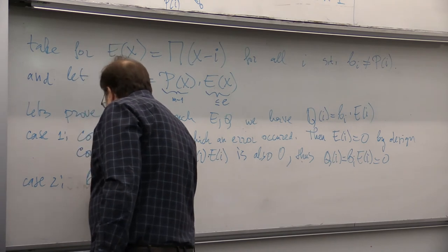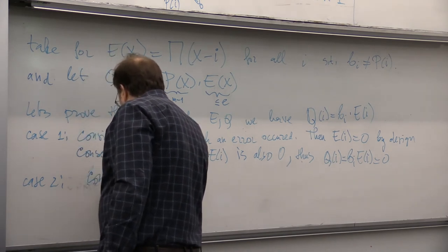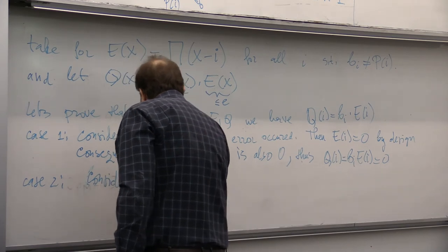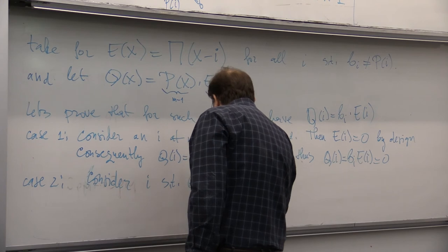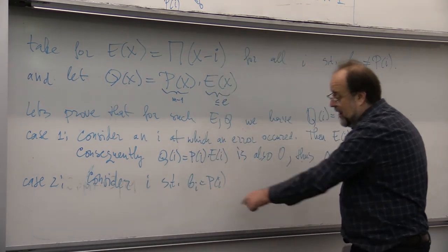Consider I such that P of I is equal to P of I. This is when the error didn't happen.